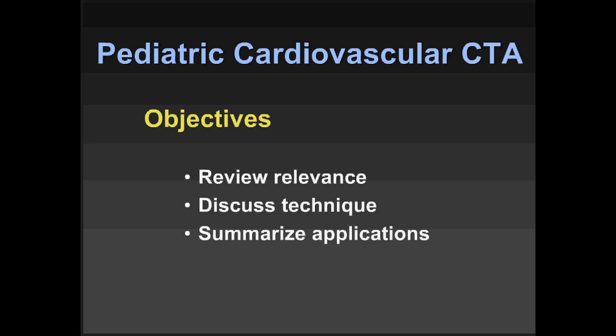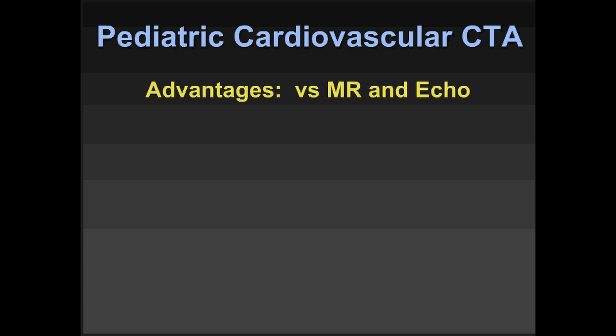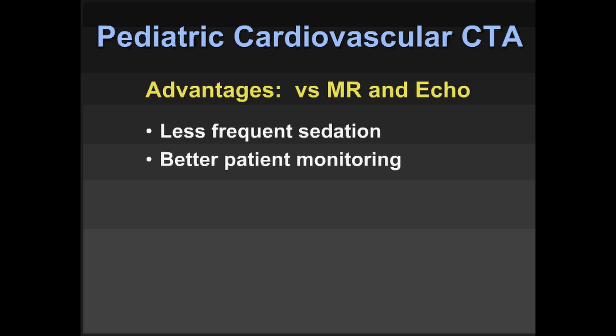I want to review the relevance, discuss the technique, and summarize the applications. We have lots of ways of looking at cardiovascular structures in children, but there are distinct advantages to CT versus MR and echocardiography. First, there is less need for sedation. If we only have to sedate kids between about one and two years of age versus echo, where they're routinely sedated up through a few years of age, and MR up to about six years of age, that's a tremendous advantage. We can now do examinations in under a second.